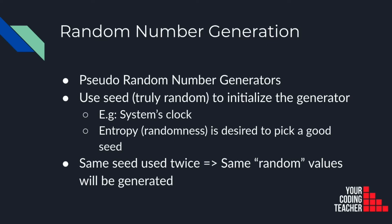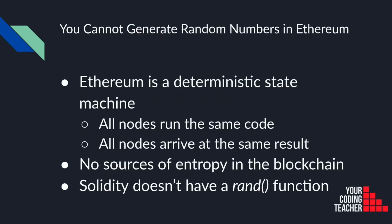In Ethereum you cannot generate random numbers. Why is that? Ethereum is a deterministic state machine. This means that all the nodes will run exactly the same code and all the nodes will arrive at exactly the same result. There are no sources of entropy in the blockchain — nothing we can use to get a seed that will be different in different nodes. Therefore you cannot generate random numbers. If you have already used Solidity, or if you learn it in the future, you will see that there is no random function.